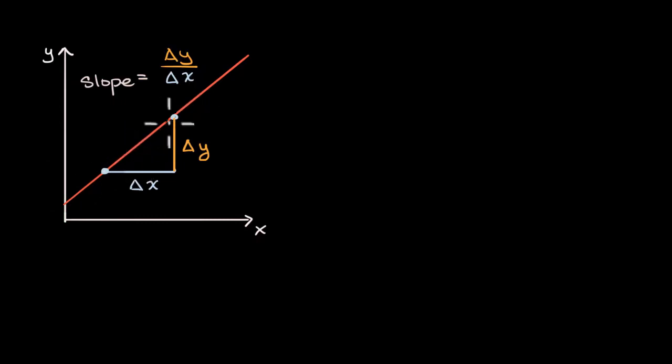If you took any two points on this line, no matter how far apart or no matter how close together, anywhere they sit on the line, if you were to do this calculation, you would get the same slope. That's what makes it a line.